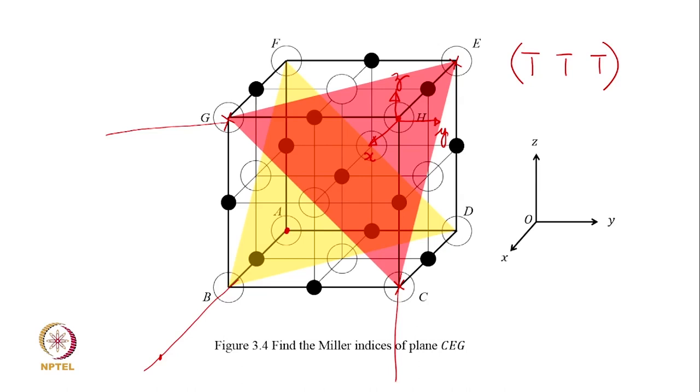It is actually a general result that any indices h, k, l, if you have a plane and if you make all of them negative h-bar, k-bar, l-bar, they will always be parallel planes.